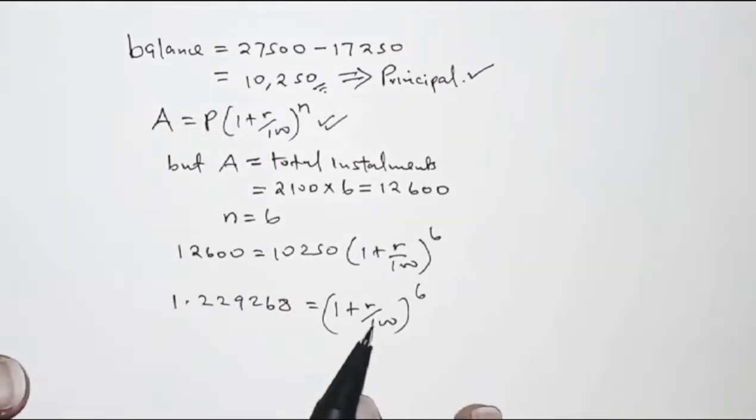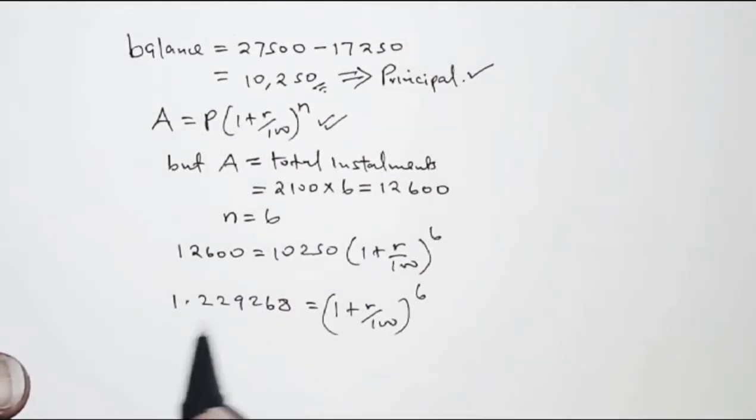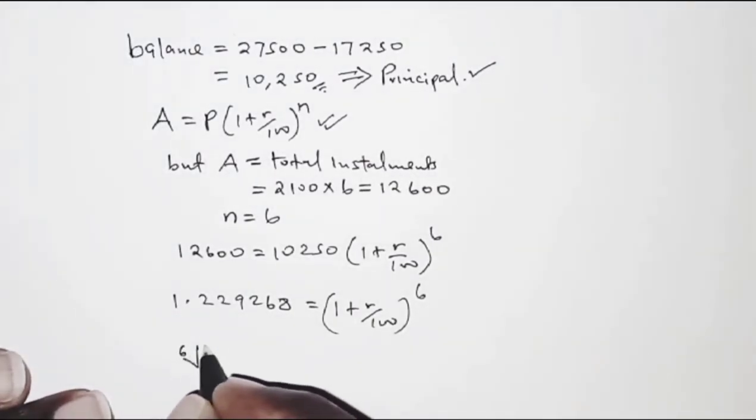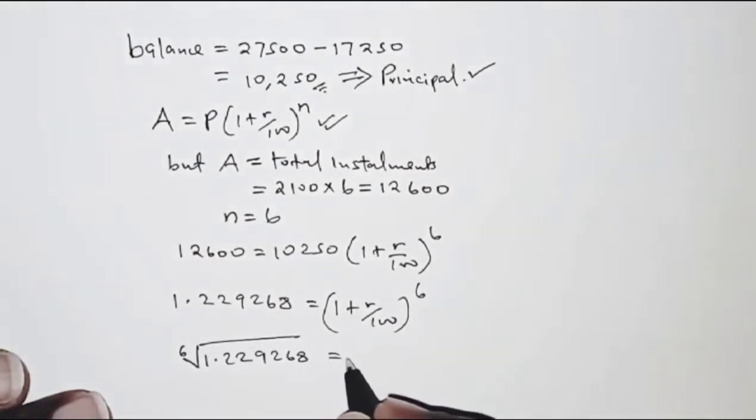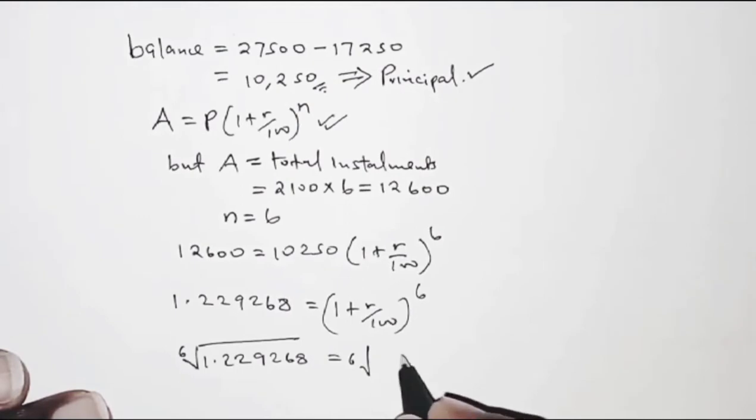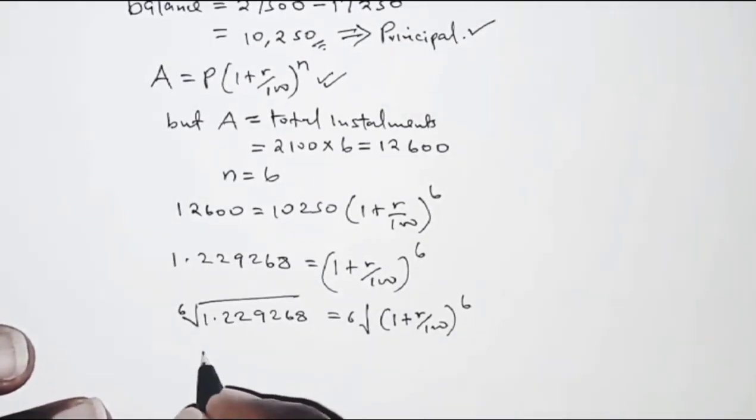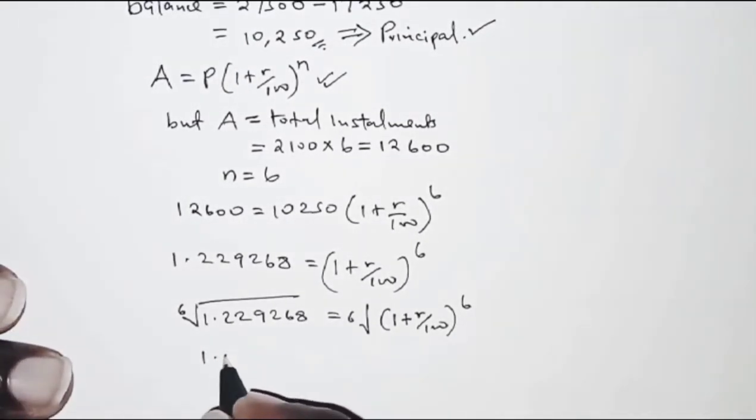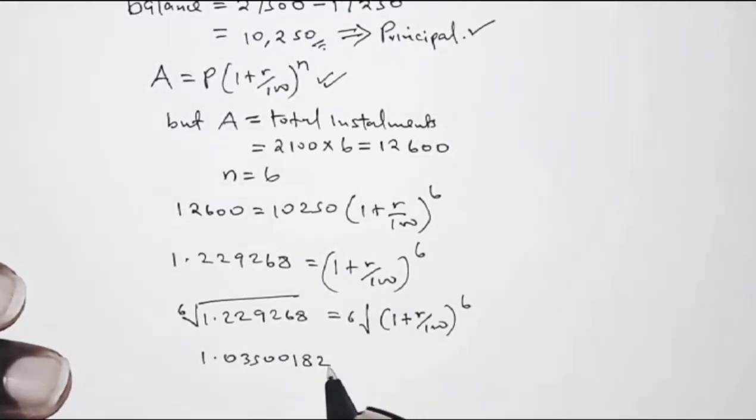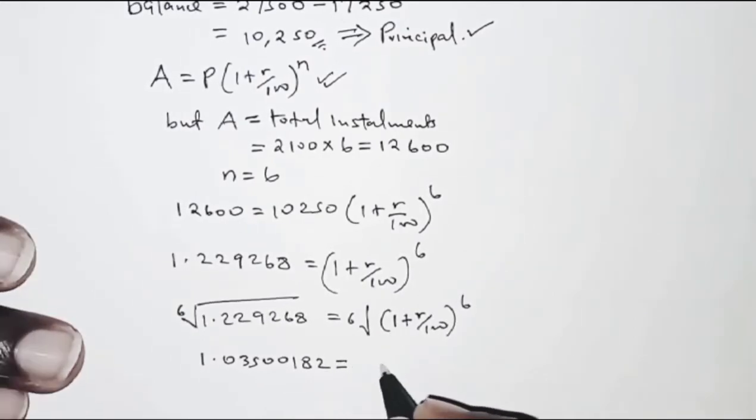So what we are going to do is find the sixth root on both sides. So the sixth root on the left hand side of 1.229268, and on the other side we have 1 plus r over 100 raised to power 6. On the left hand side we have 1.03500182 and on the right hand side we have 1 plus r over 100.